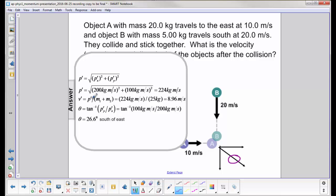that's the total momentum, the total final momentum over the two masses. So it's 224 kilogram meters per second divided by 20 plus 5, which is 25 kilograms. And I get a final velocity of 8.96 meters per second.